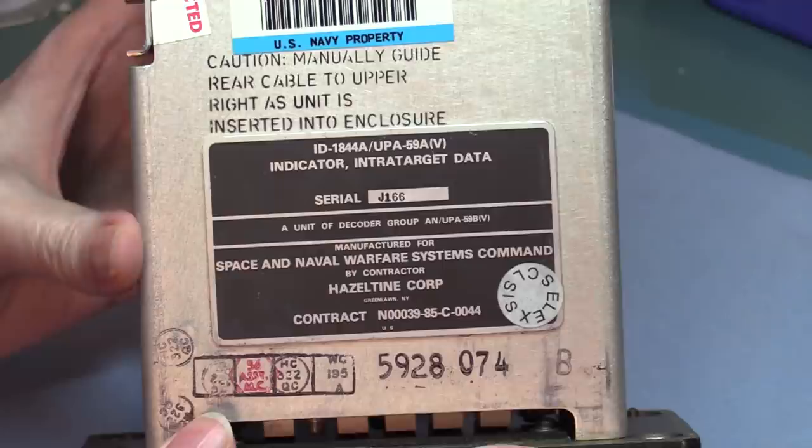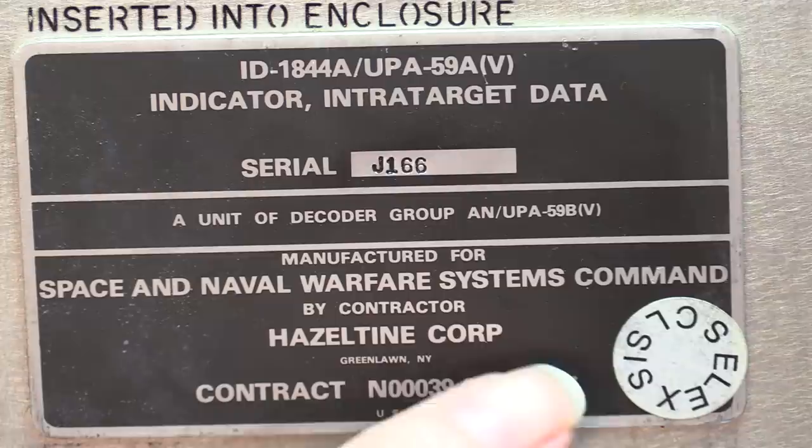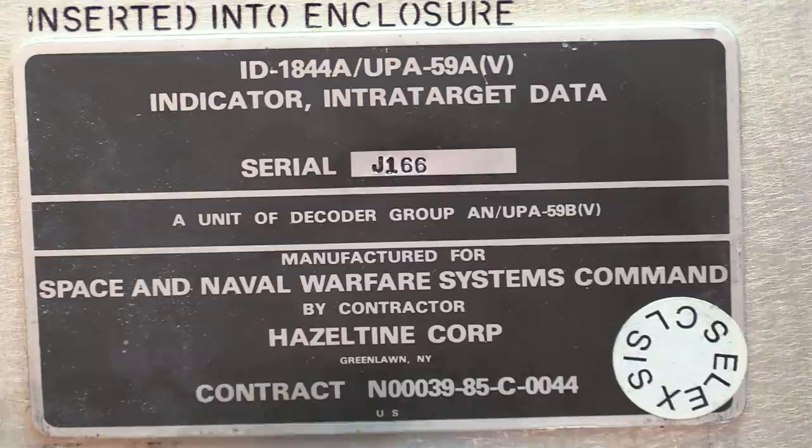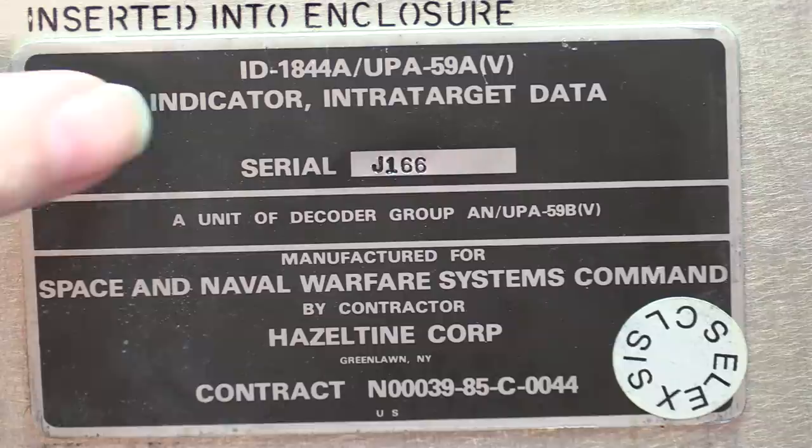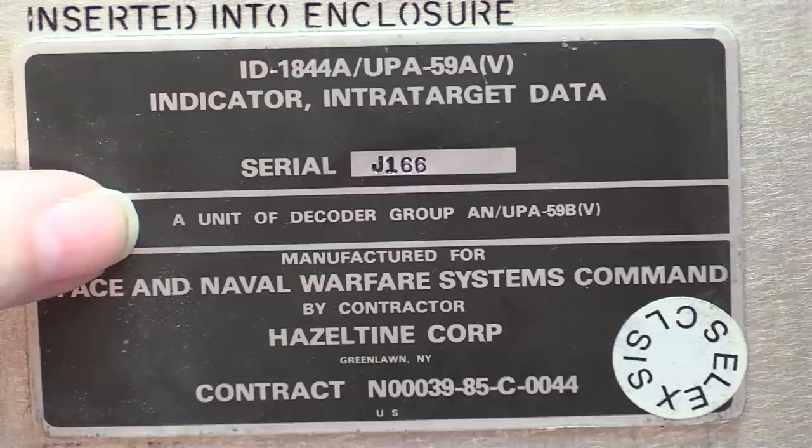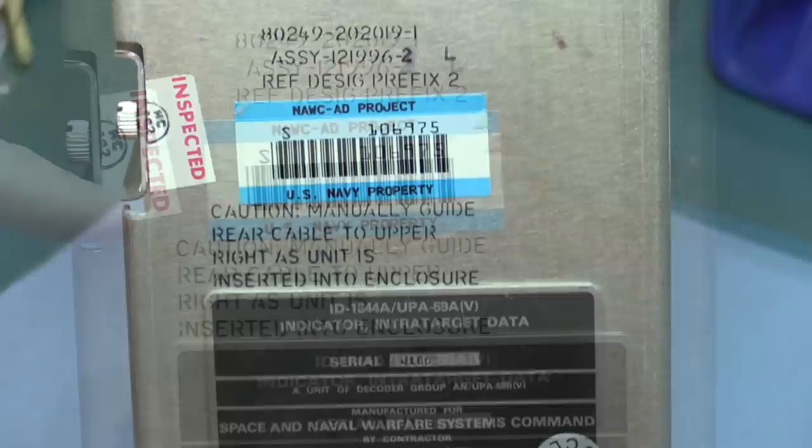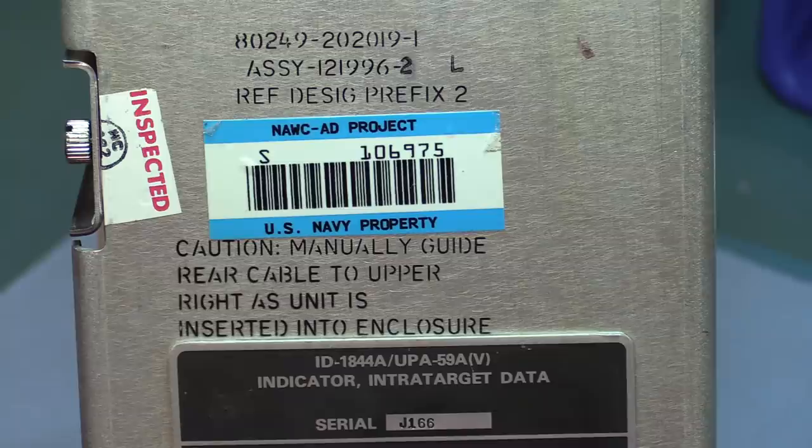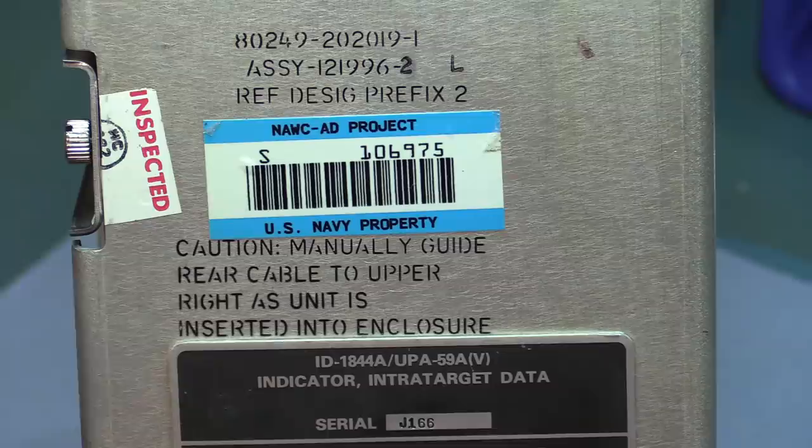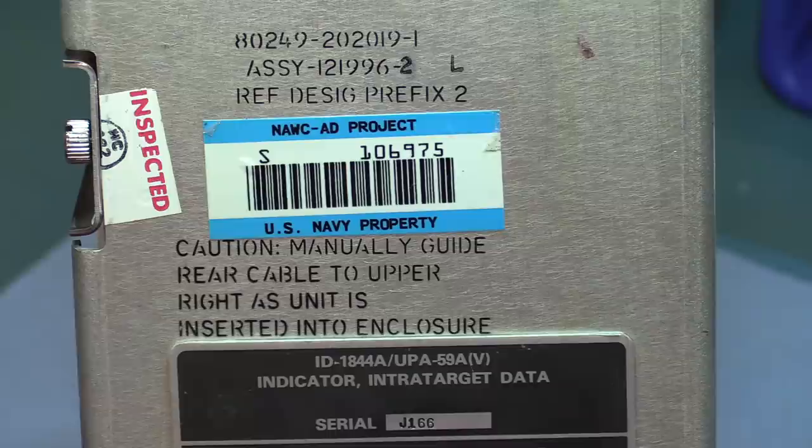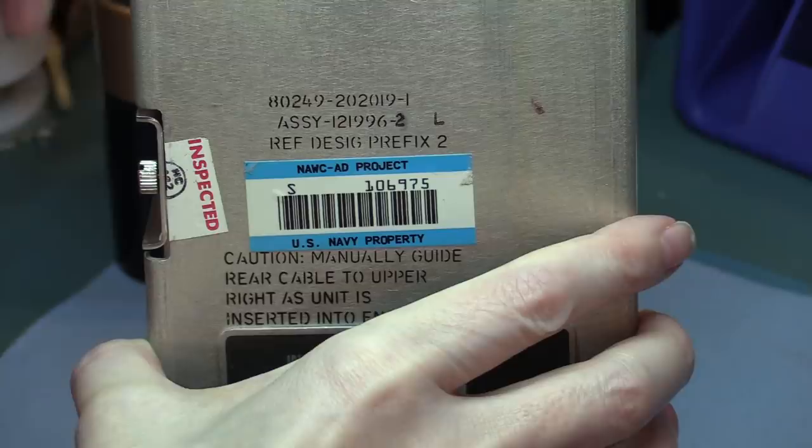It has a label on the front here. It comes from the Space and Naval Warfare Systems Command. If there's a more sinister or scary name for anything, I've never heard about it. It's an indicator of intra-target data with some serial number. It says property of U.S. Navy, but this was decommissioned. This is from an extinct missile system, so it's declassified. This is the real deal.